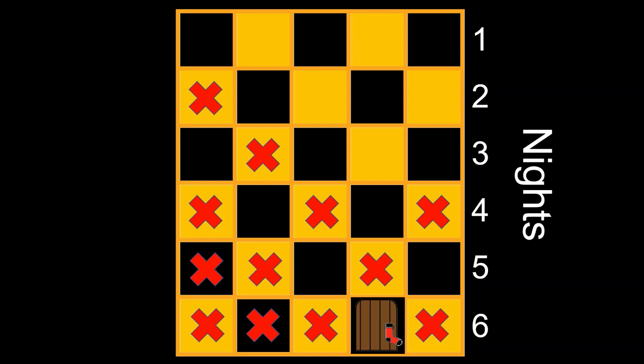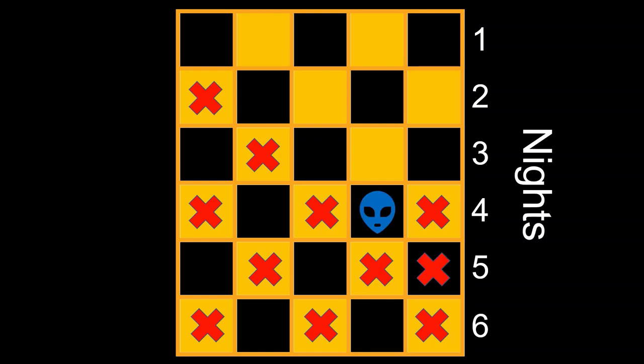Although what became of the prince when he entered the room remains a mystery to this day. Anyway, the prince could have also solved this another way, which is to start on the dark square on the opposite side and then just move diagonally from there until the sixth night.